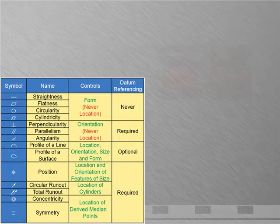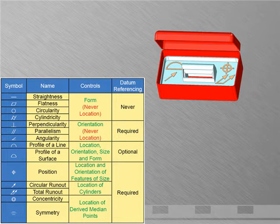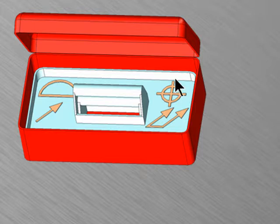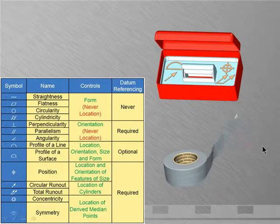In my toolbox, you'll find that there are two trays. The top tray is for those tools that I use most often, and those are the locating controls. That would be position for features that have size, or runout for either circular or total for the coaxial features, and profile of a surface, which can locate any surface on any feature. Profile of a surface is like the duct tape of geometric dimensioning and tolerancing.